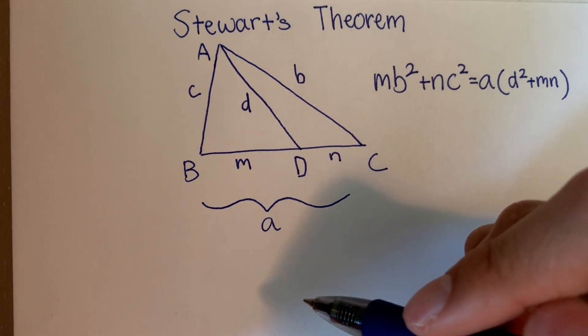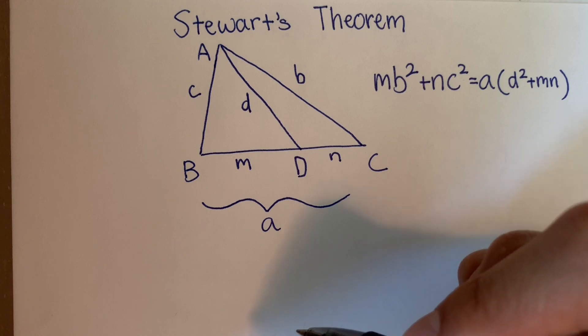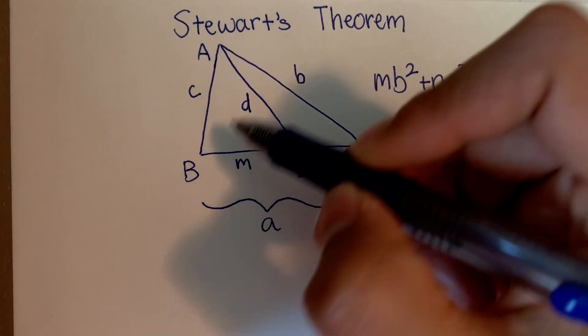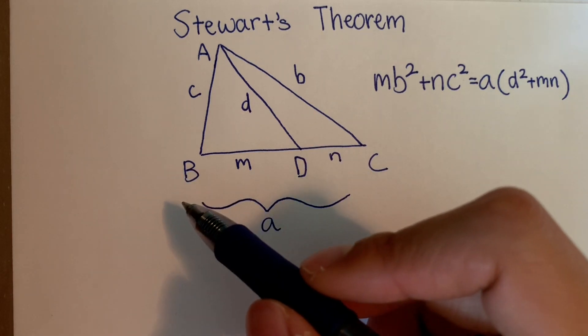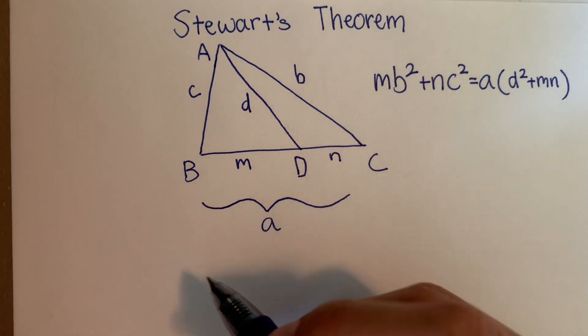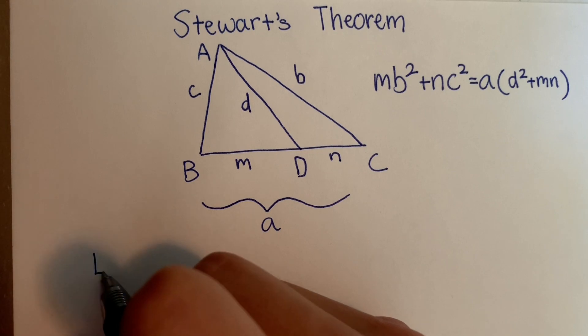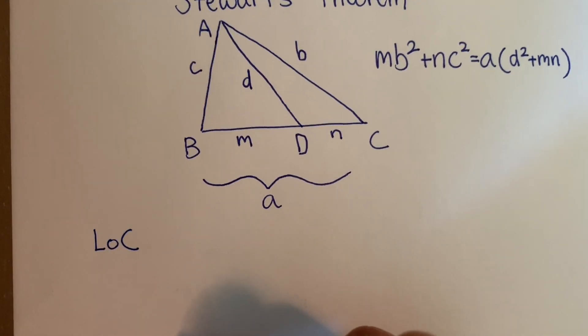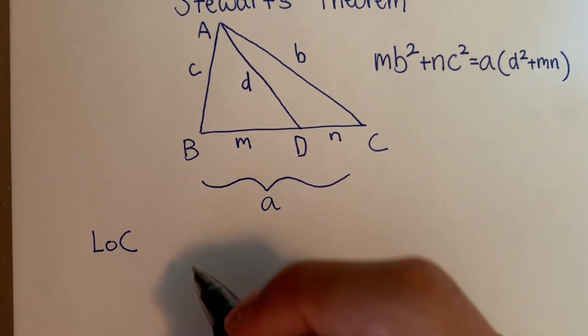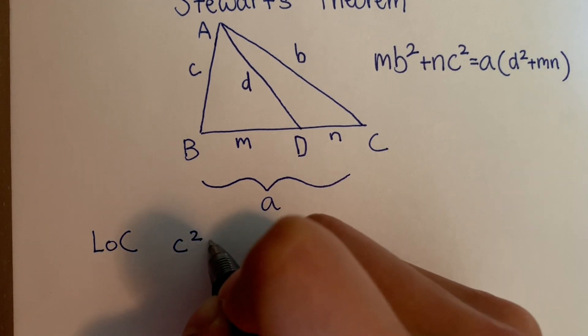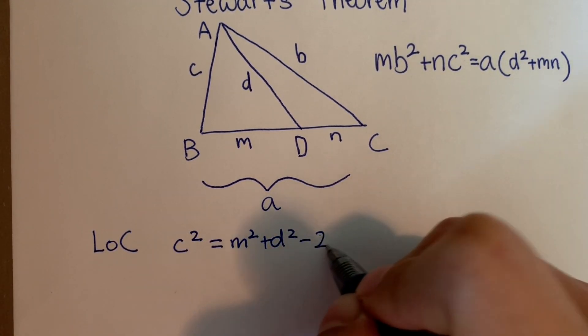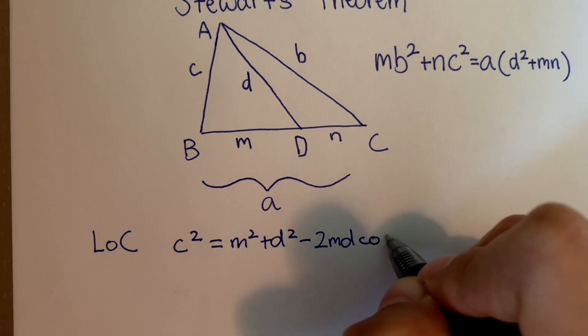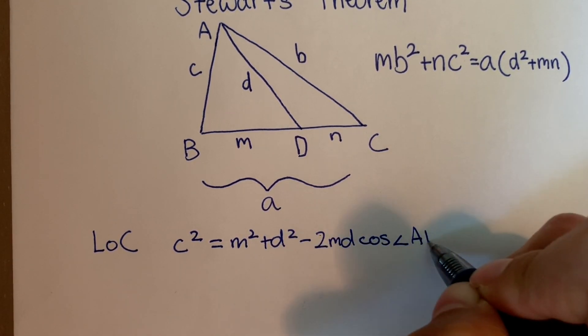To figure out which angles we're going to use in the law of cosines, see that angle ADB and angle ADC together form a straight angle. So let's start off with the law of cosines in triangle ABD. So we have C squared equals M squared plus D squared minus 2MD cosine angle ADB.